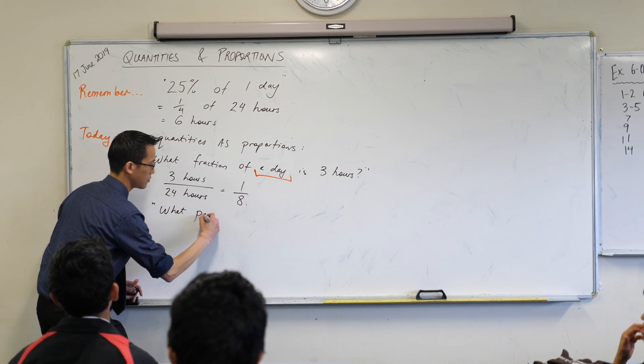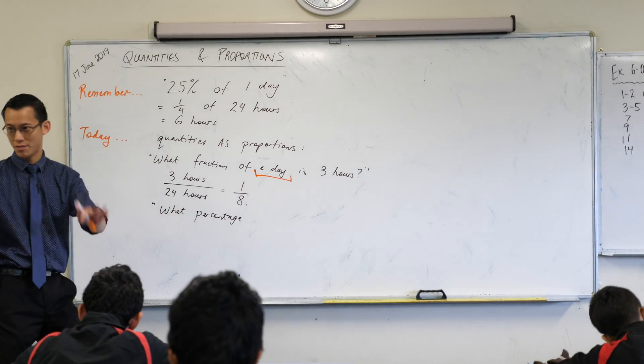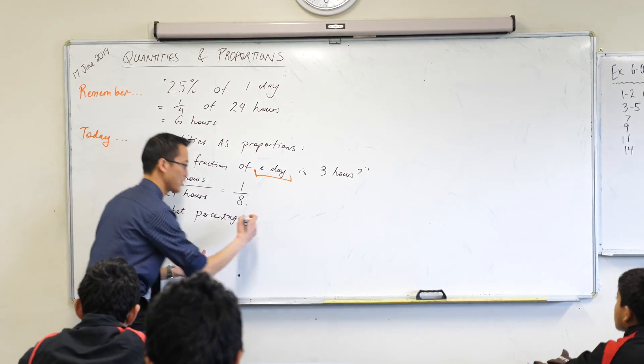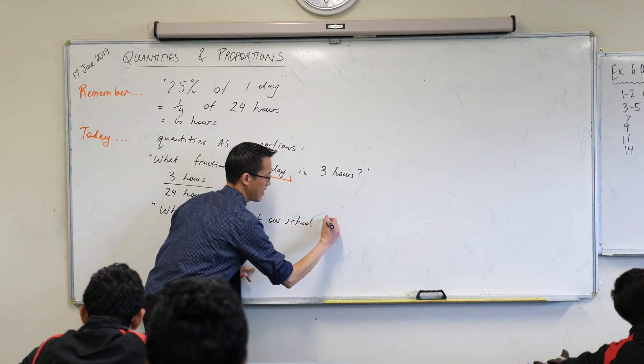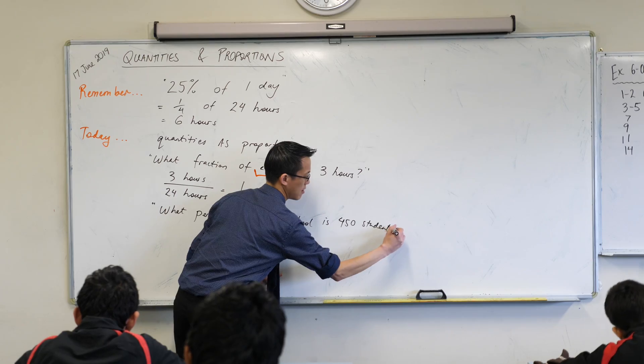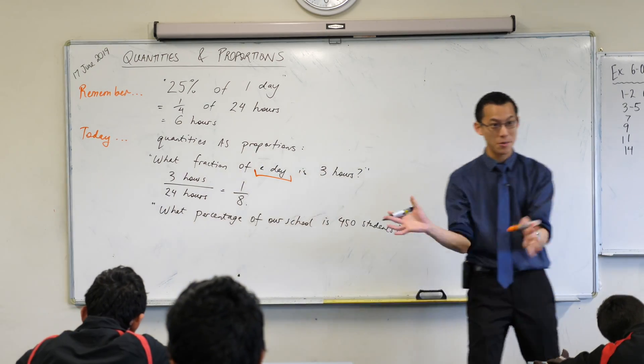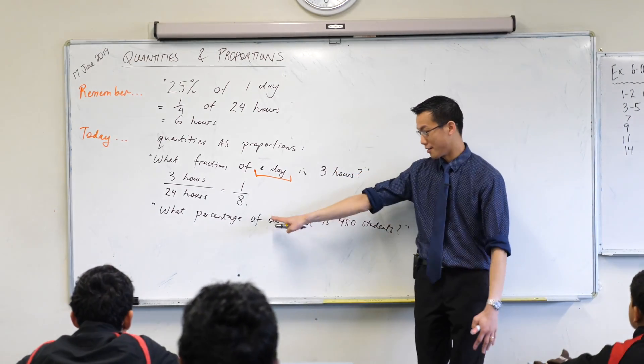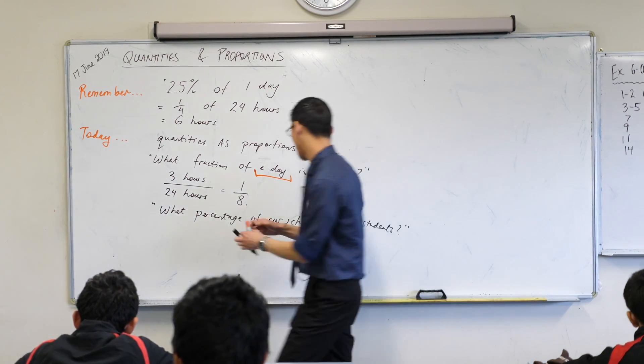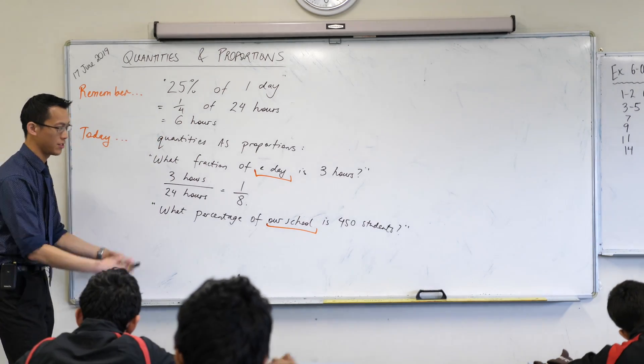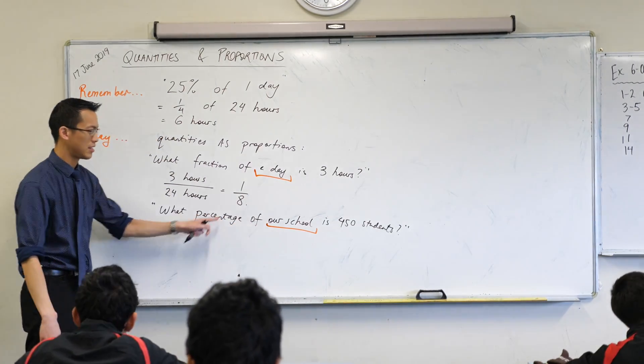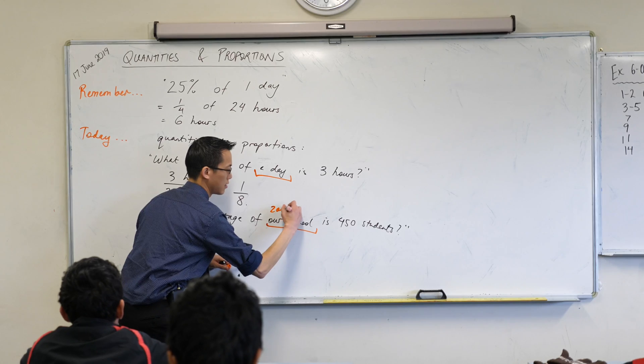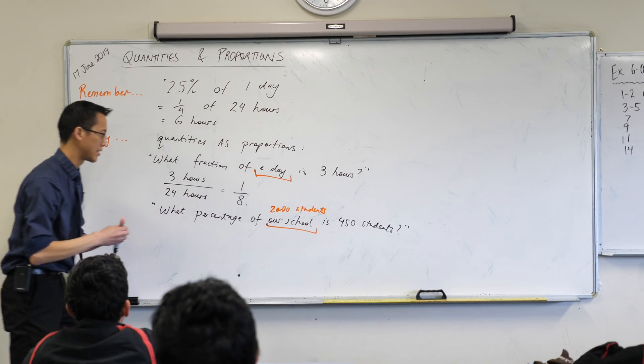Let me give you another quick example. With this time, let's talk about percentages. Does anyone know roughly, don't have to be exact to the individual, but roughly how many students are there in our school? Two thousand. There are roughly two thousand. So I'm going to say, what percentage of our school is 450 students? Okay. We're going to ask the same question as before. What is the whole unit? Before it was a day. What's the whole unit here? It's going to be, it's a school, our school, which is 2,000 students, right? So I'm going to highlight that again.